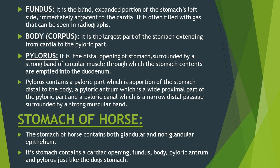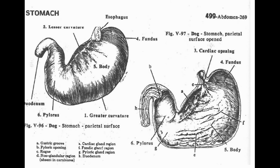The fundus is the blind expanded portion on the stomach's left side, present adjacent to the cardia, often filled with gas visible on radiographs. The body is the largest part, extending from the cardia to the pyloric part. The pylorus is a distal opening surrounded by a strong band of circular muscles controlling the transport of stomach contents into the duodenum and regulating stomach emptying. The pyloric part includes the pyloric antrum, which is the wide proximal part, and the pyloric canal, which is the narrow distal passage surrounded by the strong muscular band.